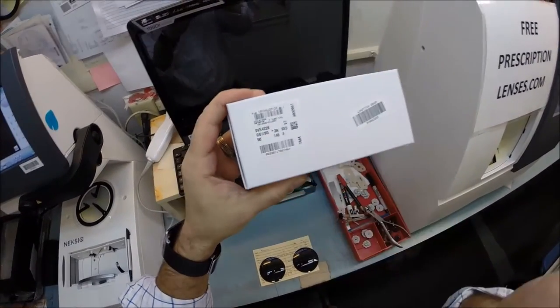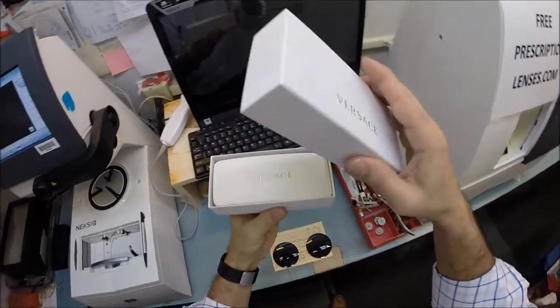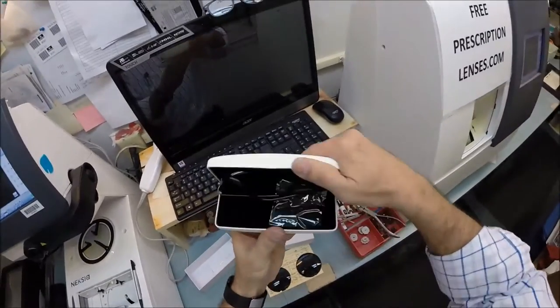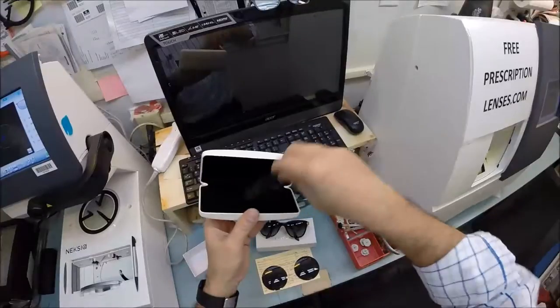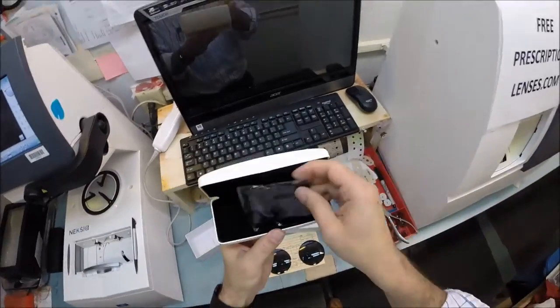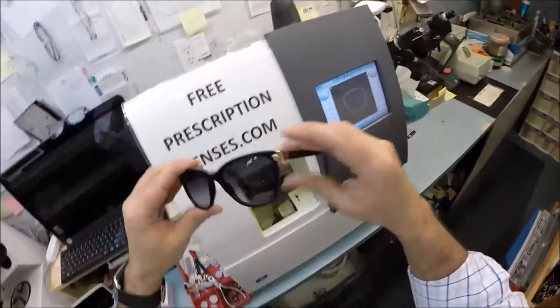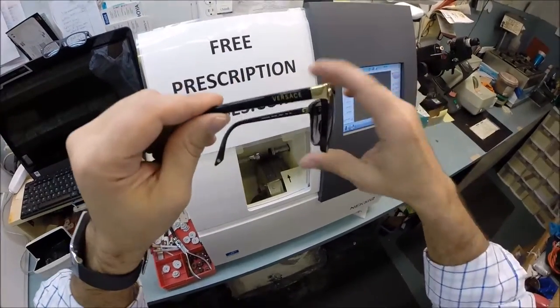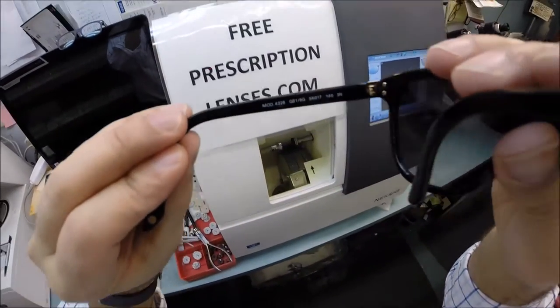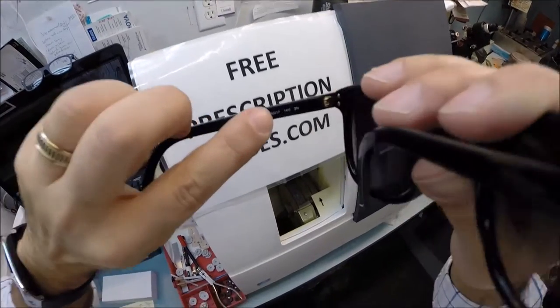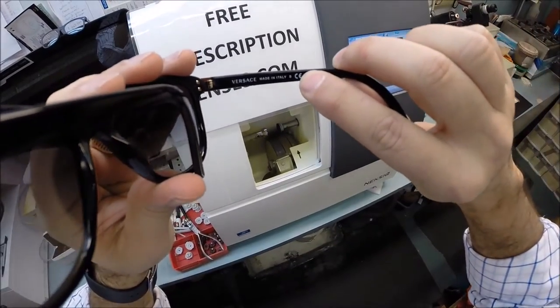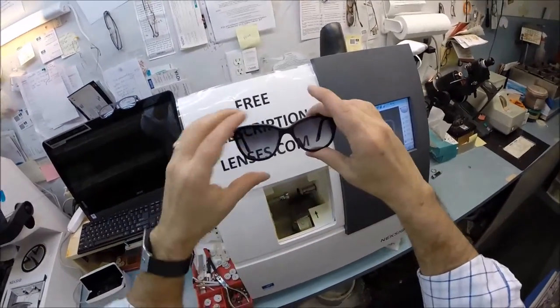This is the Versace box it comes in, your Versace case, card of authenticity, and your frame with the cleaning cloth. The frame has the Medusa up front on each side and the classic lettering Versace on each side. This is model 4228 color GB1 in the 56 eye size with the 17 bridge, made in Italy.